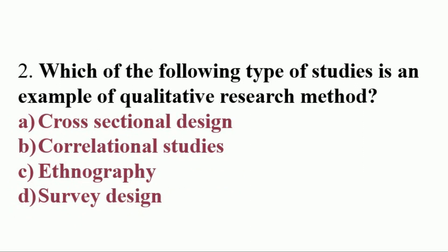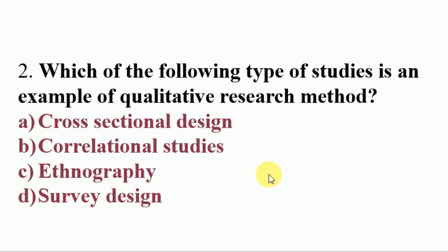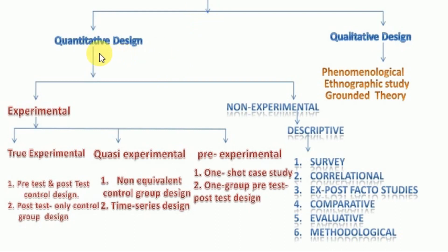Next question: which of the following types of studies is an example of a qualitative research method? Options: A. cross-sectional design, B. correlational studies, C. ethnography, D. survey design. The answer is C, ethnography. Cross-sectional design, correlational studies, and survey design are examples of quantitative research. Research design is classified mainly into quantitative and qualitative. Quantitative design is divided into experimental and non-experimental, where non-experimental includes survey, correlational, and comparative studies.